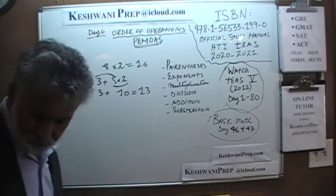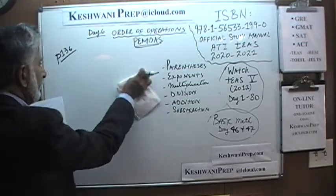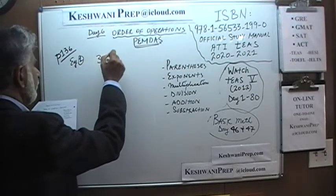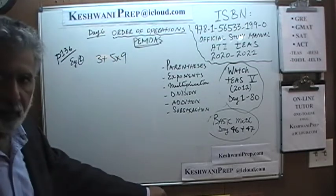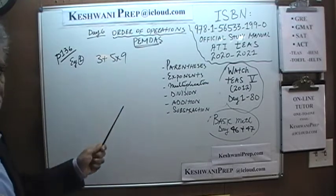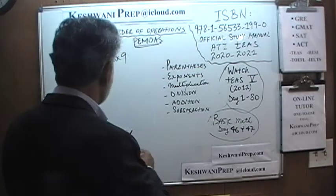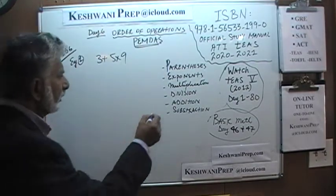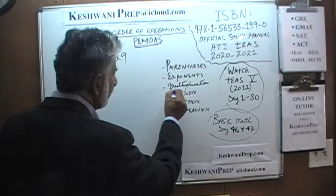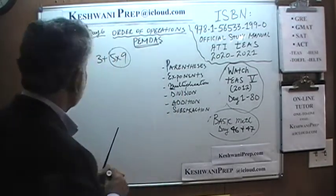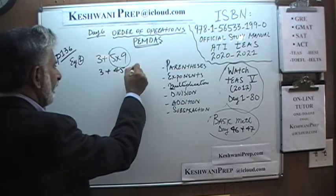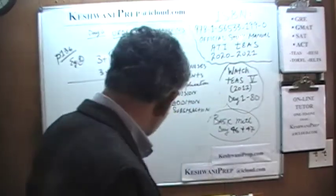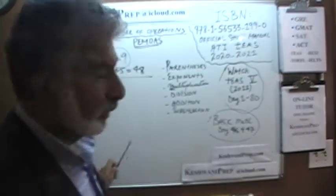Let's do a few examples. On page number 136, there are some very simple examples. Here is example number 1: 3 plus 5 times 9. We just talked about a situation like this. Do I do 3 plus 5 to get 8 and then times 9? Or do I do 5 times 9 and then plus 3? We have to follow the rules. First we do parentheses — there are none. Then exponents — there are none. So we do multiplication first before addition. Five nines are 45, so it's 3 plus 45, and the answer is 48. Everybody on the whole planet will come up with the same result.